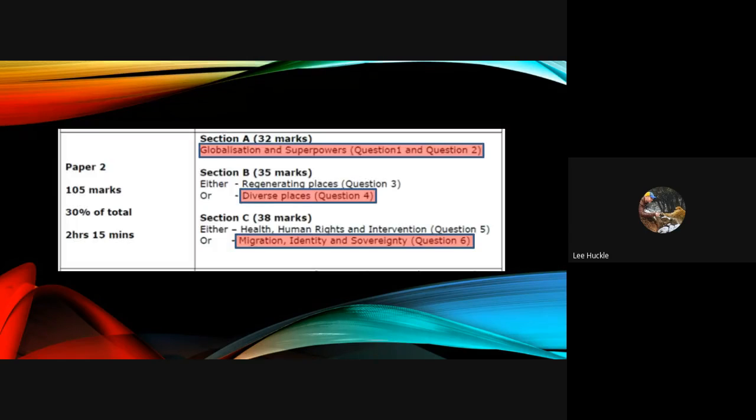Hello everybody, welcome to the next Jog Pod which is focusing on the component parts of Exam Paper 2. Exam Paper 2 in A Level Geography is looking at the human geography side of the course.